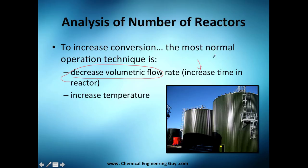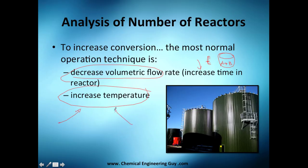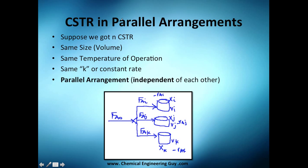To increase conversion, the strategy is to decrease the volumetric flow rate — that increases the space time, giving more time in the reactor for A to react — or increase the temperature, which is very common except when it causes engineering problems like hazards, vaporization, heat transfer issues, or increased costs. All those factors must be considered before just increasing temperature. That was CSTRs in series — next video we'll cover CSTRs in parallel, which is a bit more straightforward.